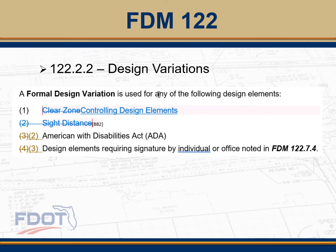The next update for section 122.2.2 is for design variations. A lot of this was included in a previous bulletin that went out earlier this year. One of the big things that we changed was to require that formal design variations are only required on controlling design elements, ADA requirements, and design elements requiring signature by individuals or offices in FDM 122.7.4.